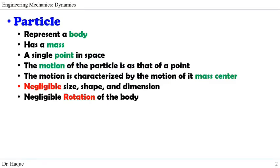In engineering mechanics, a particle represents a body and it has mass. It is a single point in space. The motion of the particle is as that of a point, and the motion is also characterized by the motion of its mass center. Finally, we assume negligible size, shape, and dimension of that particle, and we also assume negligible rotation of the body.